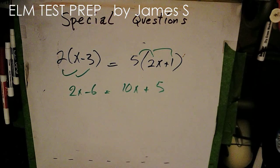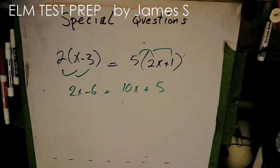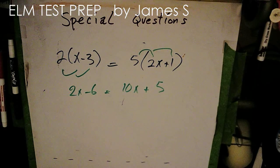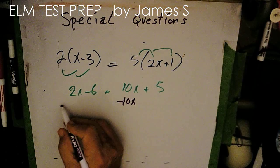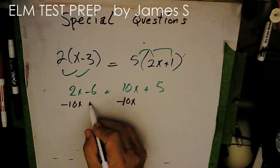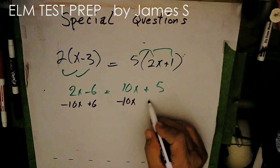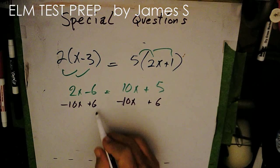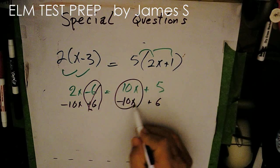Well, now I want my x's on one side and the numbers on the other. So I'm going to subtract 10x here and I'm going to subtract 10x over here. Well, I'm going to undo this minus 6 with a plus 6. So I'm going to add 6 over here. Well, this will go to 0 here and this will go to 0 here.